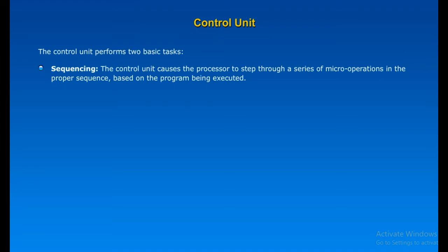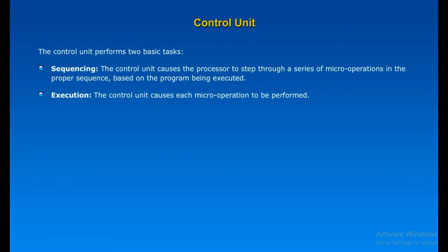The control unit performs two basic tasks. Sequencing: the control unit causes the processor to step through a series of micro-operations in the proper sequence based on the program being executed. Execution: the control unit causes each micro-operation to be performed. Since micro-operations do not all happen at one time, timing the micro-operations is a feature that makes the task of modeling a control unit easier.